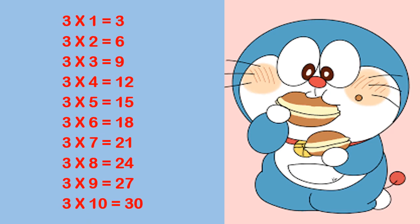Let us revise the table of 3. 3 1s are 3. 3 2s are 6. 3 3s are 9. 3 4s are 12. 3 5s are 15. 3 6s are 18. 3 7s are 21. 3 8s are 24. 3 9s are 27. 3 10s are 30.